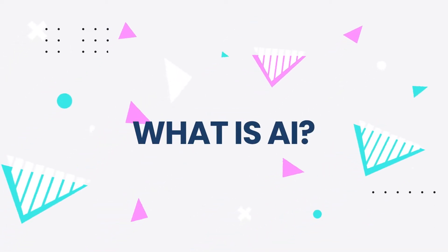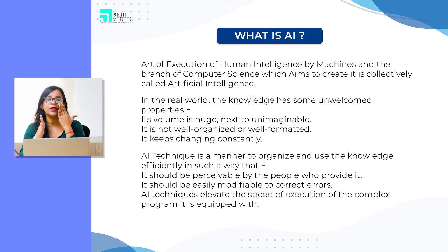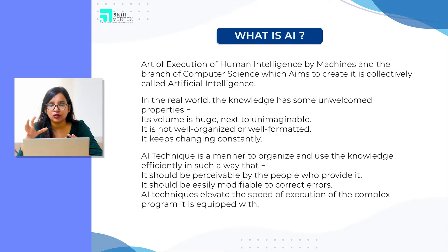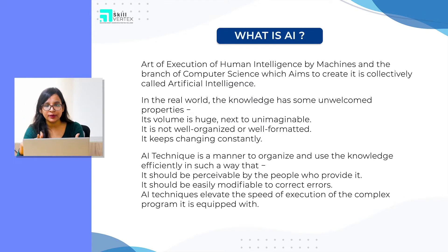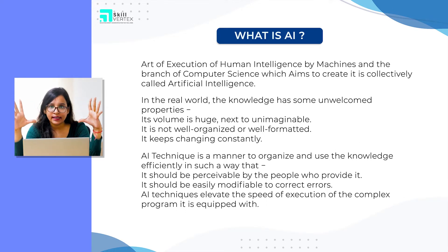What is artificial intelligence? Basically, it is a branch of computer science. It is the art of execution of human intelligence by machines. The branch of computer science which aims to create it collectively is called artificial intelligence.